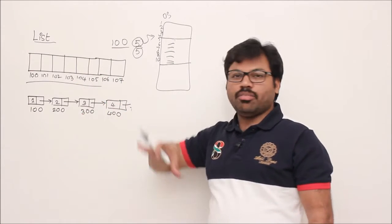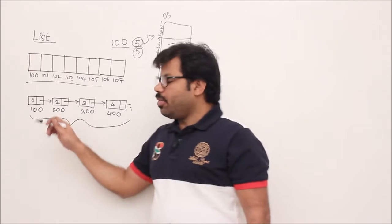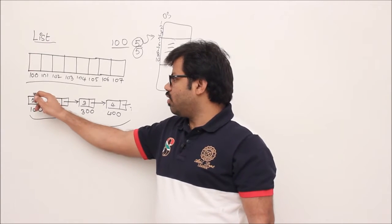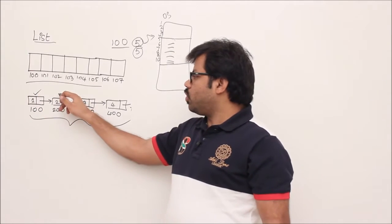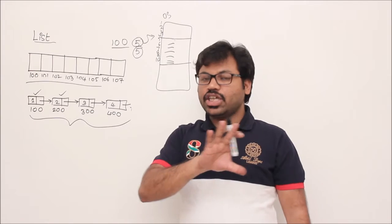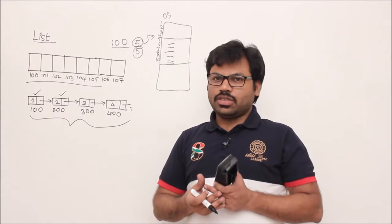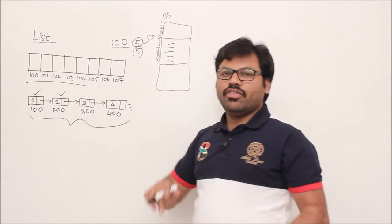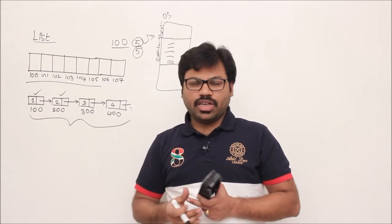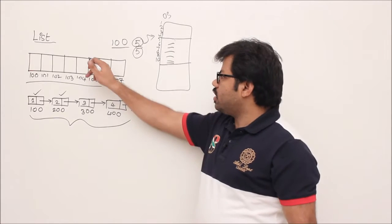The second model is the non-contiguous memory model — here we don't need to reserve space. Dynamically, on an installment basis, whenever you want to store some data you simply ask the OS for one memory location. The next time you need memory, you ask again. You can ask at any time, but consecutiveness is not guaranteed — that's why this is called the non-contiguous model. In the non-contiguous model you don't need to reserve space, so you get flexibility and you are not wasting space. In the contiguous model you may be wasting space.